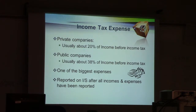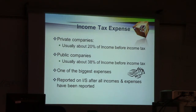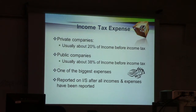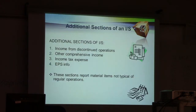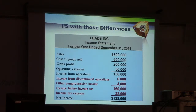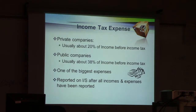Then you have income tax expense, which can be broken down into two components. For a private company, income tax expense is about 20%, depending on the province — in Ontario it is about 16%. For public companies, it can be anywhere between 35% and 45%; in Ontario it is about 38% these days. So income tax expense can be a significant expense for a public company. It is reported on the income statement after all incomes and expenses have been calculated — at the very end.